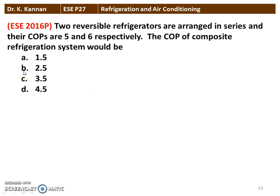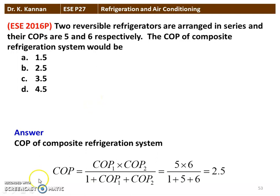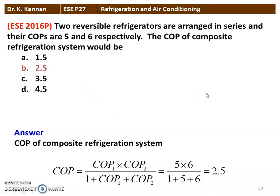Next question from the 2016 question paper: Two reversible refrigerators are arranged in series and the COPs are 5 and 6 respectively. The COP of the composite refrigeration system would be — there are 4 options here. COP of the composite refrigeration system equals COP1 into COP2 divided by 1 plus COP1 plus COP2. Substituting: 5 into 6 divided by 1 plus 5 plus 6, equal to 2.5. So, the correct answer is 2.5.